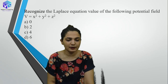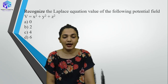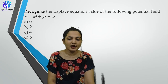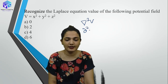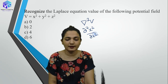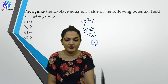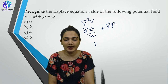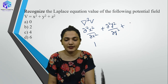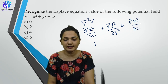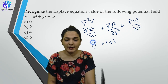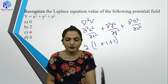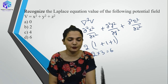Recognize the Laplace equation value. del²V = del²(x²+y²+z²). del²(x²)/del(x²) + del²(y²)/del(y²) + del²(z²)/del(z²) = 2+2+2 = 6. Each second derivative of a squared term gives 2, and 2×3 = 6. So the answer is 6.